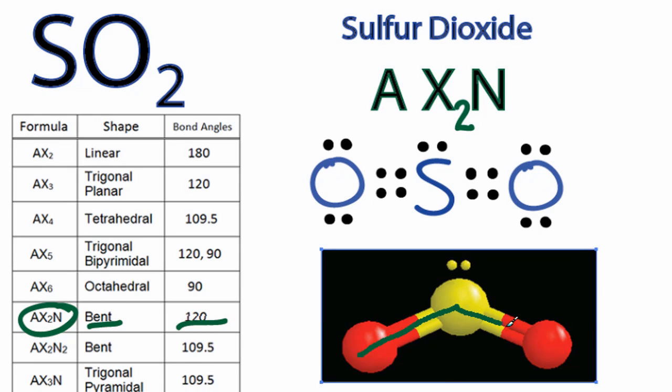That bond angle looks like this. And that's it, the SO2 molecular geometry. It's bent at a bond angle of 120 degrees.